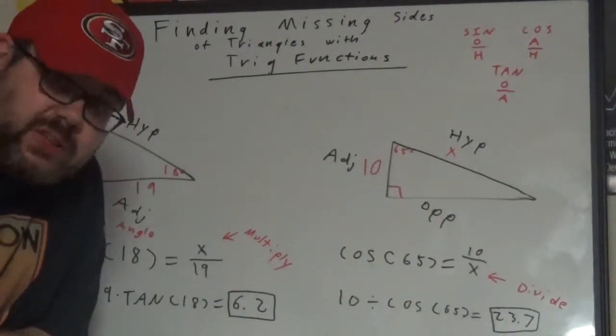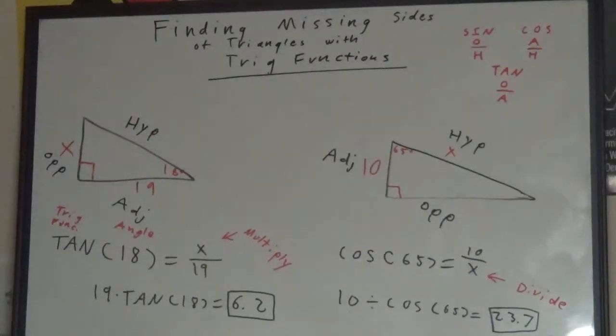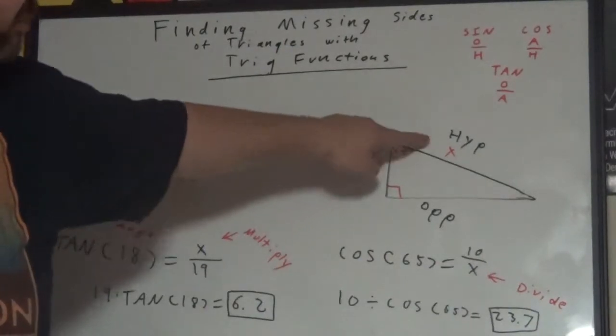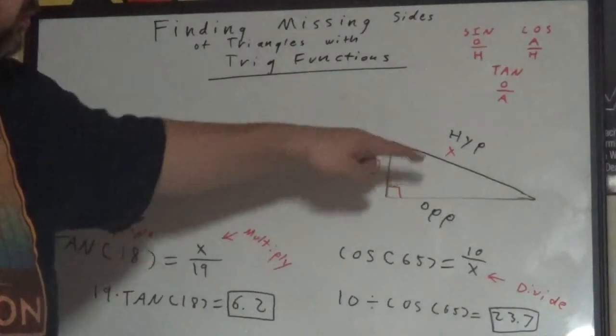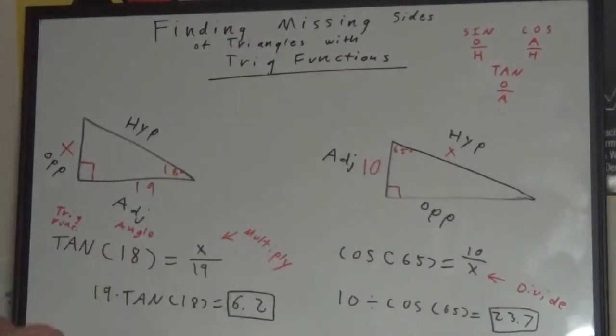Next, once your three sides are labeled, select the correct trig function based on what two sides you have. For instance, adjacent and hypotenuse. Adjacent and hypotenuse, of course, would be cosine, so you would select cosine.